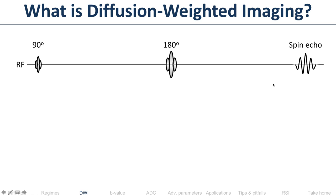How do we do diffusion-weighted imaging? We start with a 90-degree radiofrequency pulse, we do a 180-degree refocusing pulse, and we collect an echo — that's a spin echo sequence. This is one of the first things you learn when studying MRI. Diffusion-weighted imaging starts with a spin echo sequence. Not so complicated — we're just doing a spin echo sequence.